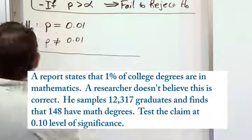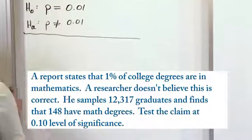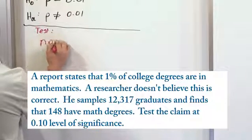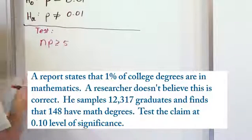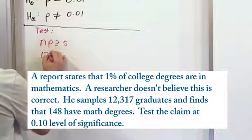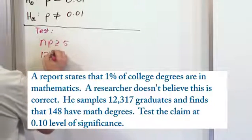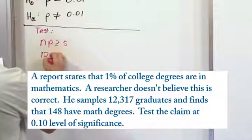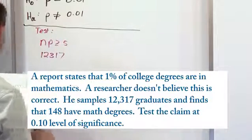So we're going to test for normality: np greater than or equal to 5. How many people does he sample? Not 1,200... it's 12,317. Right, that's how many people we sample.